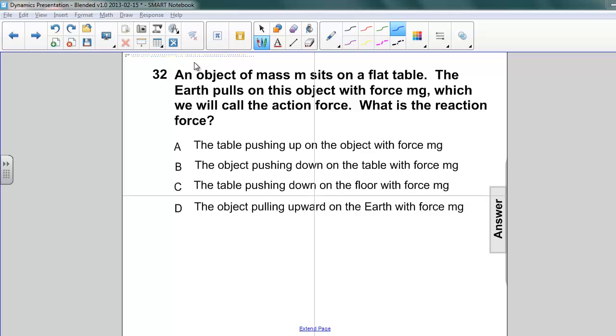Well, first of all, let's think about this. We've already got something pulling down on the object. The earth is pulling down on the object. So if we're going to have a reaction force, it has to be in the opposite direction. Let's look at some of these answers. The table pushing up on the object with force mg, that's definitely in the right direction. It's upward. The second one is the object pushing down on the table with force mg. Well, as we said, the reaction force has to be going in the opposite direction.